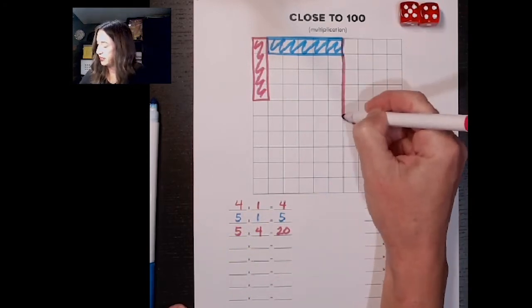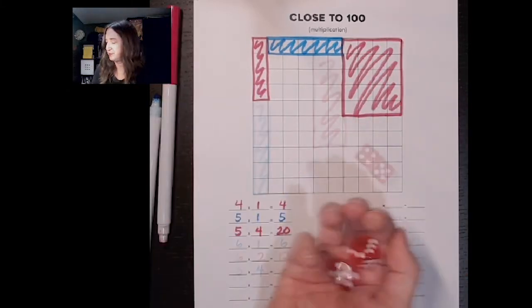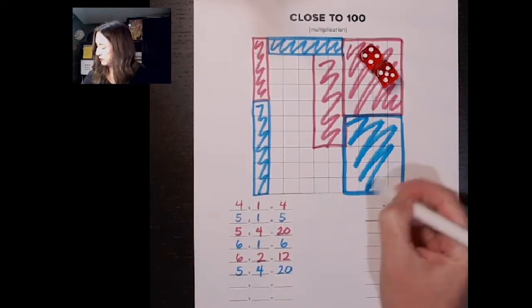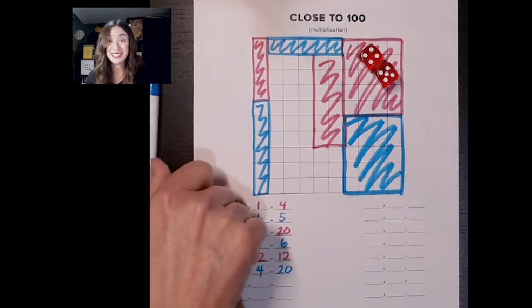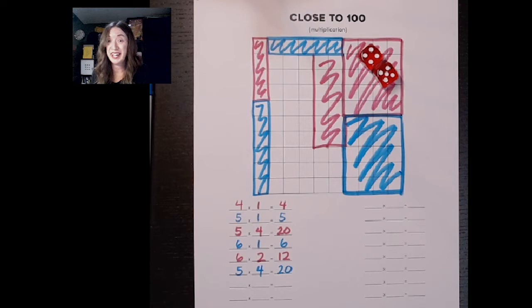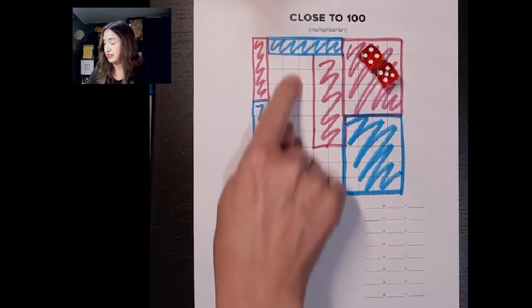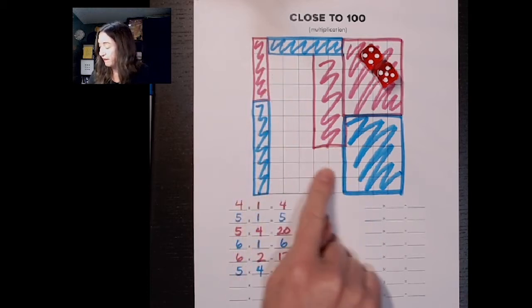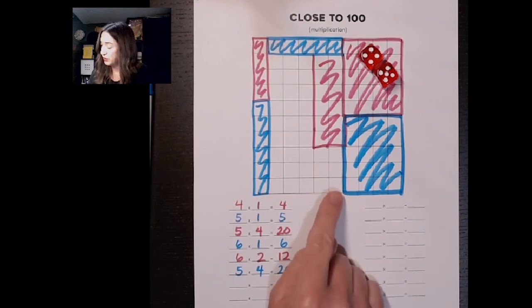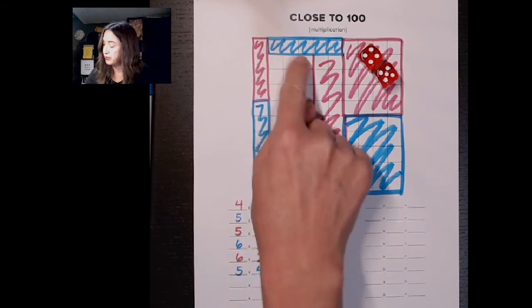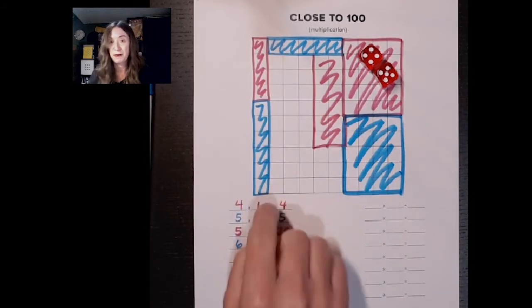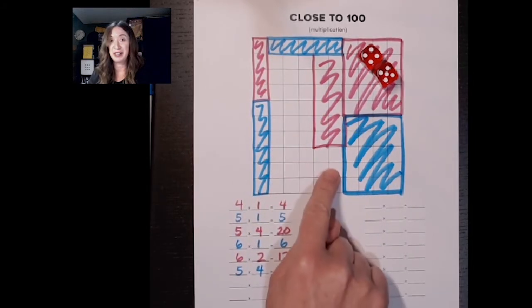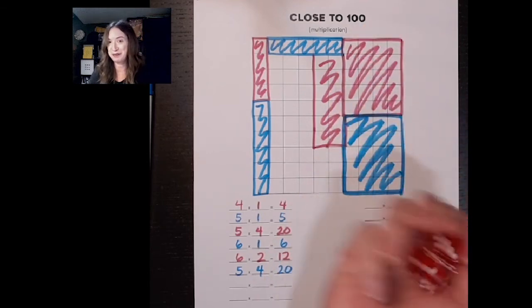So this is where the game starts to get interesting because if I roll another 5 and a 4, whether I'm the pink or the blue partner right now, I won't be able to put that array anywhere that I have left because it would have to be 5 by 4. So I'm hoping that I get some 3s or maybe a 5, 5 times 3 or some 3s that way or some 2s because I might run out of room quickly. Let's see what we get. It's pink's turn.